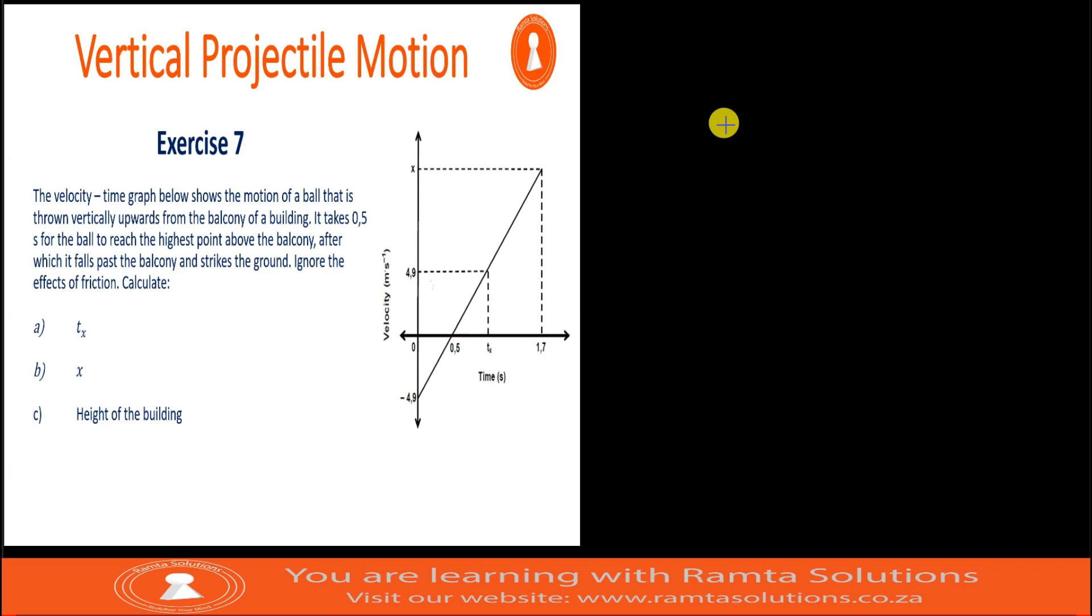Ignore effects of friction. When we look at this graph, we can see this is the initial velocity. This is the time it takes to reach maximum height. This is the velocity to return to the initial position, and this is the velocity to strike the ground.